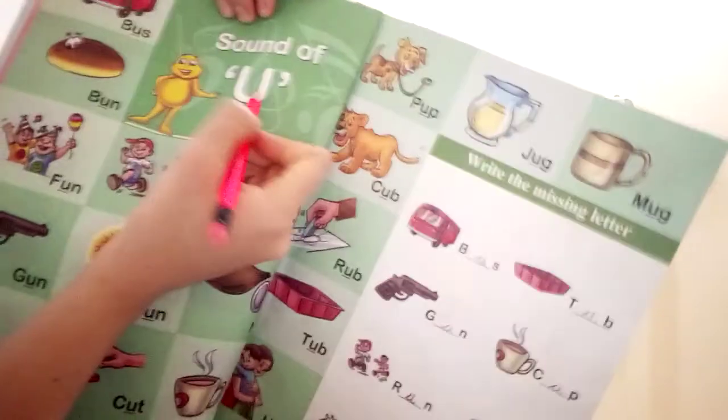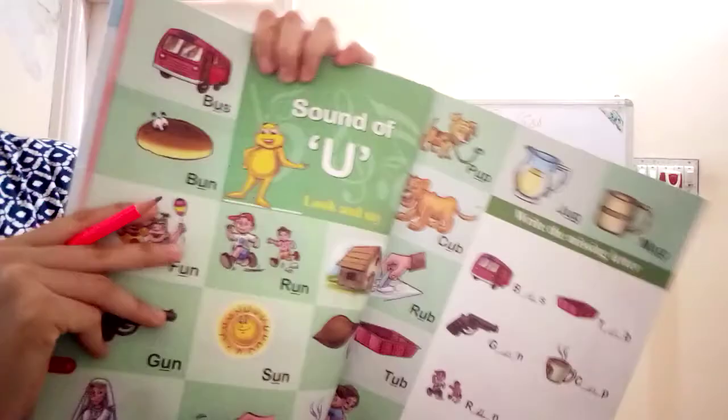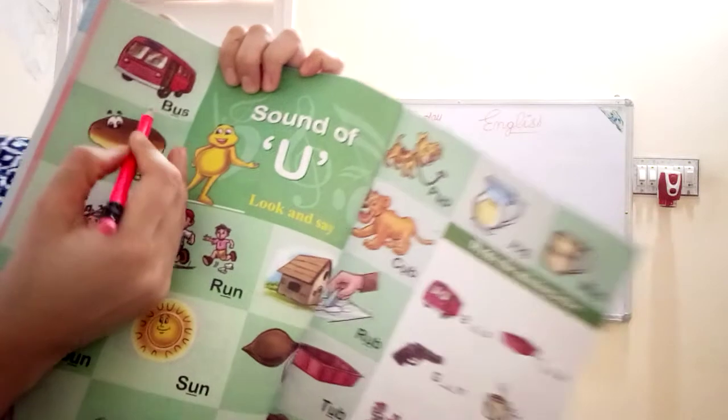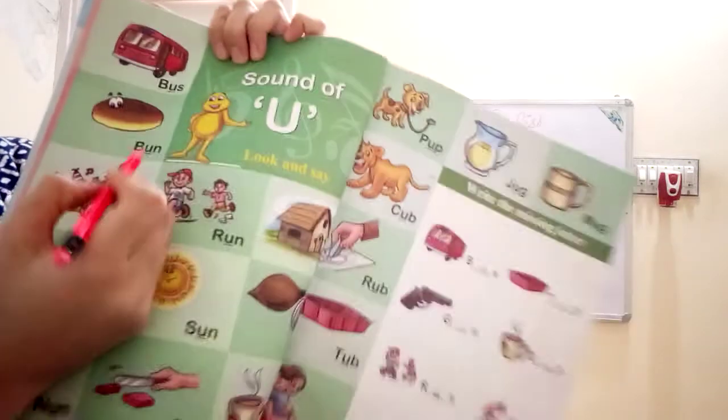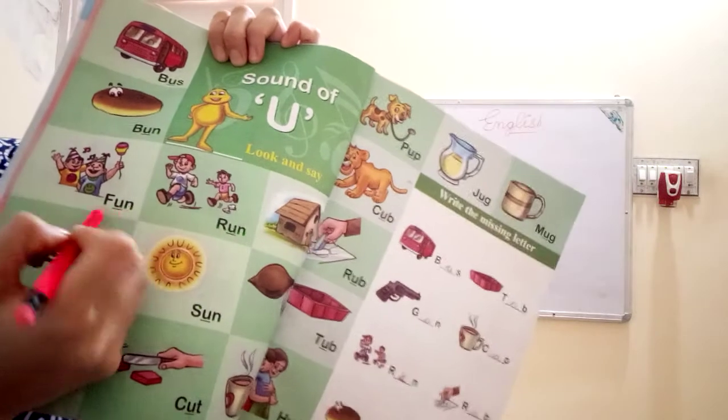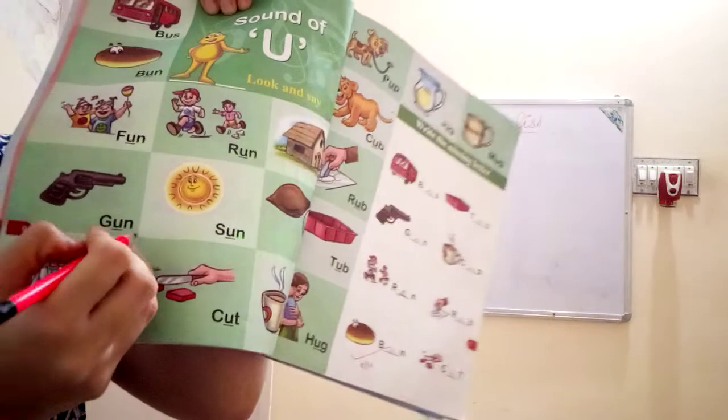Sounds of U. B.U.S. Bus. What is B.U.S? Bus. Next, B.U.N. Bun. F.U.N. Fun. G.U.N. Gun. N.U.N. Nun.